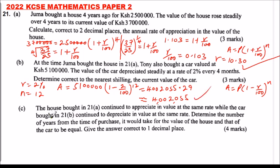Part C: The house bought in 21A continues to appreciate in value at the same rate, while the car bought in 21B continues to depreciate in value at the same rate. Determine the number of years from the time of purchase it would take for the value of the house and the value of the car to be equal. Give the answer correct to one decimal place.